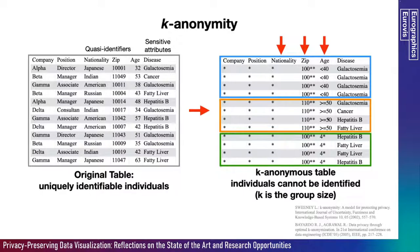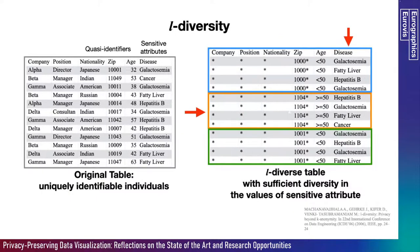But if an attacker has background knowledge, they can easily identify an individual from this table. In order to overcome this limitation, we use the l-diversity model. On the left-hand side, we have the same hospital dataset, and on the right-hand side we have a three-diverse table. In this table, we can see that within each group there are three different values for the sensitive attribute 'disease,' which overcomes the limitations of k-anonymity.